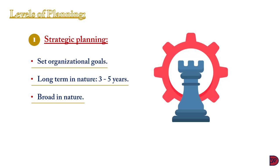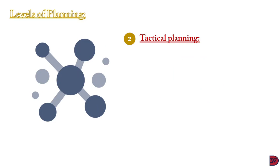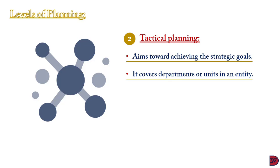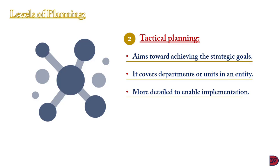Strategic plans are broad in nature and need to be broken down before implementation. These plans are produced at the highest level of management, mostly at the board level. The second type of planning is tactical — it primarily seeks to achieve the strategic plans by breaking them down and setting targets for departments. It has more detailed steps of implementation, for example producing budgets for units of the business.